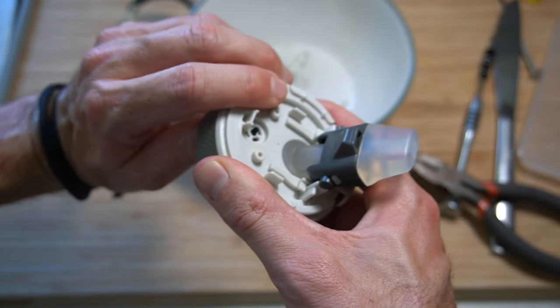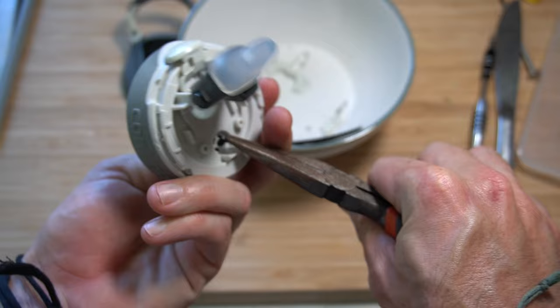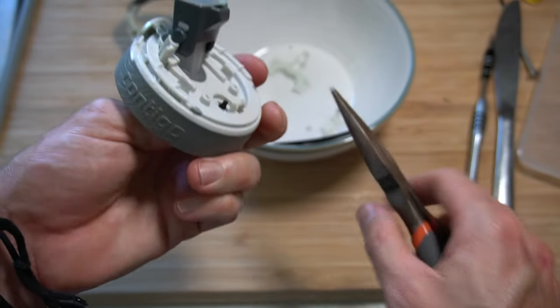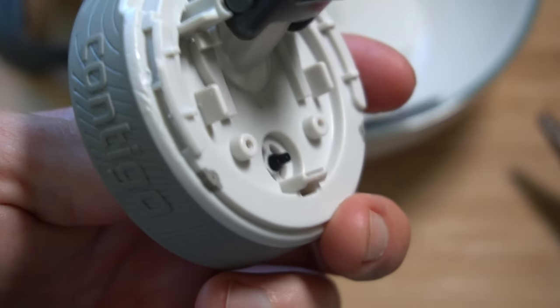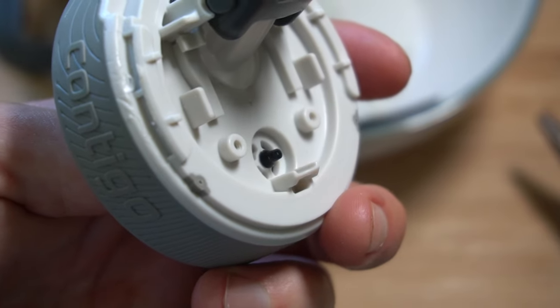If you push hard with your thumb, sometimes it pops all the way through, or sometimes you need to grab it with your pliers and pull it through. So you just want to make sure that it's all the way through so that it's not going to come out anymore.